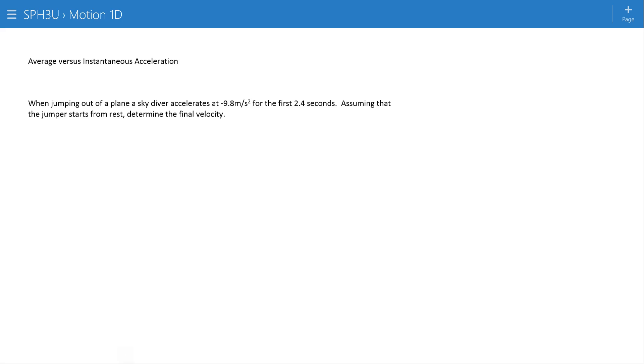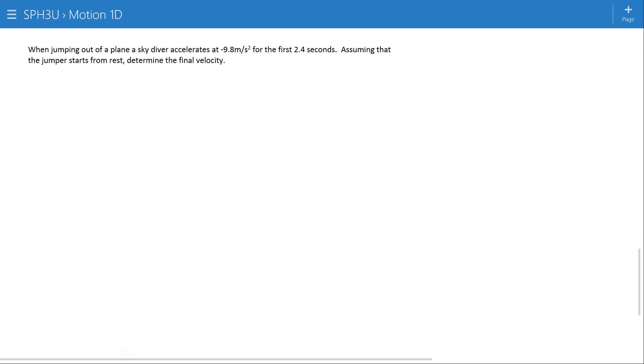All right, let's do one more problem here, and we're just going to hit a problem where we have to solve that equation a little bit more. When jumping out of a plane, a skydiver accelerates at negative 9.8 meters per second squared.